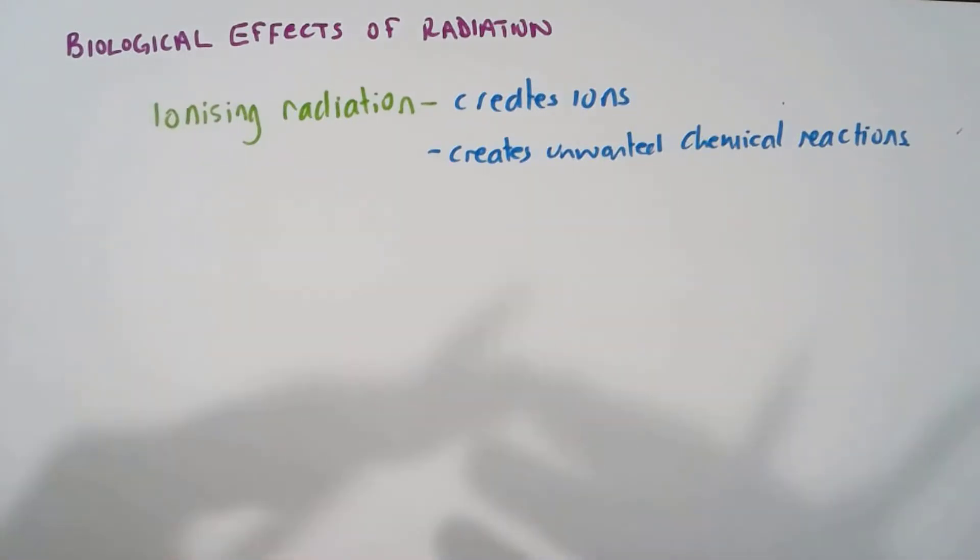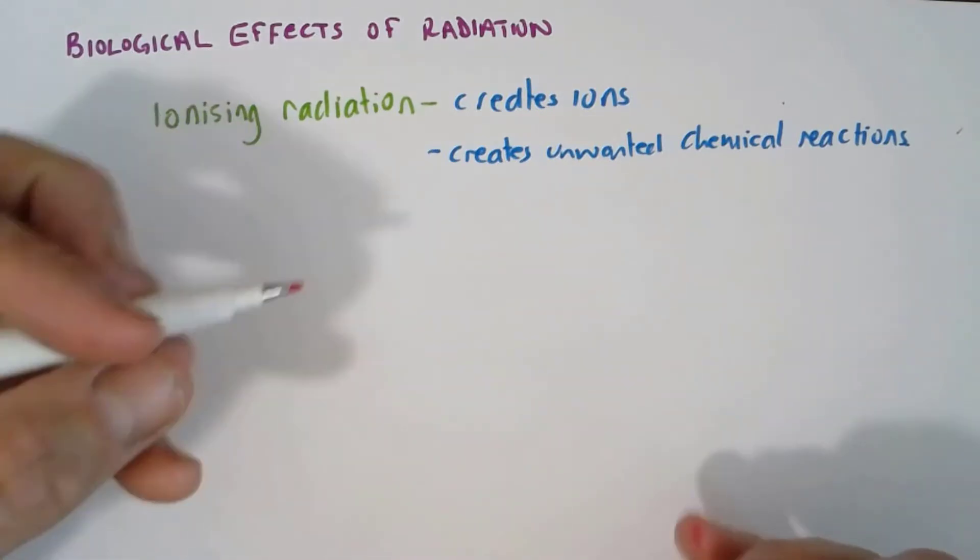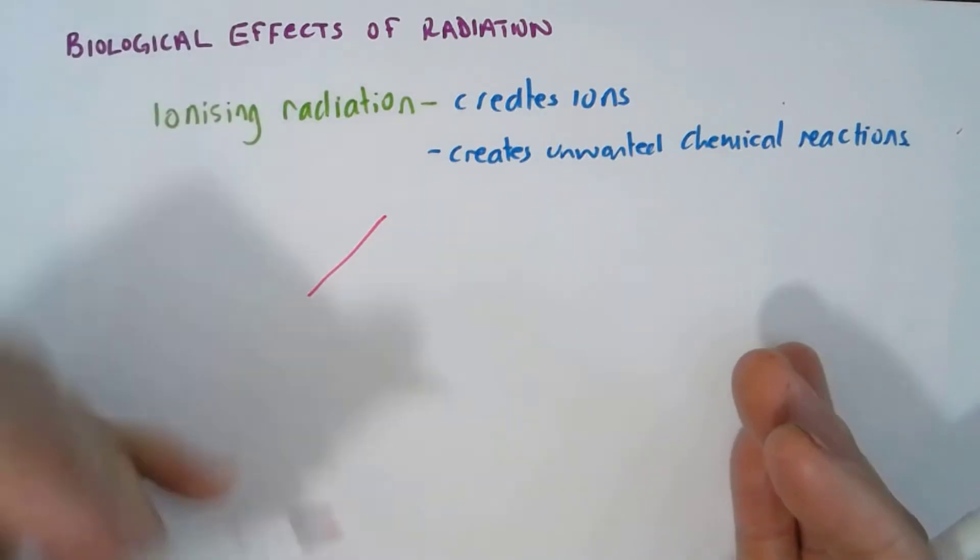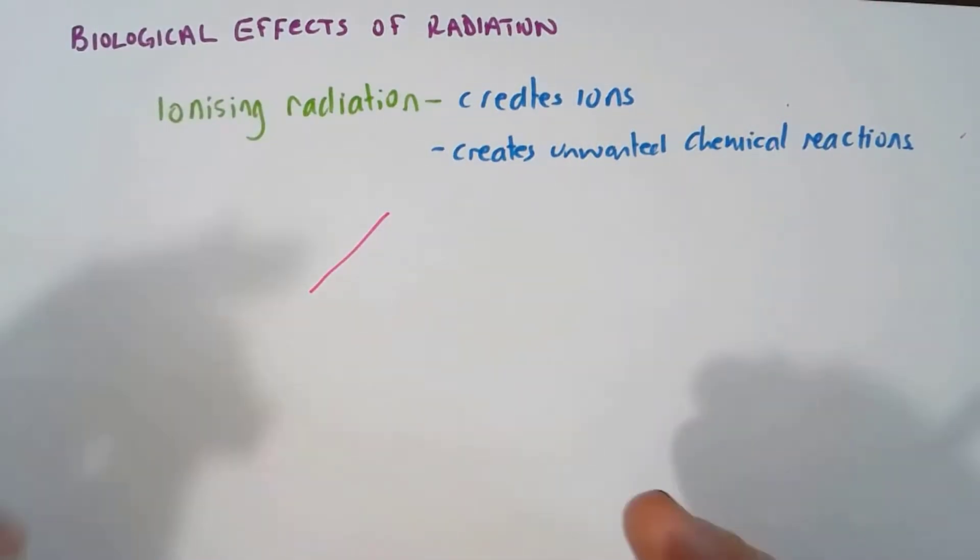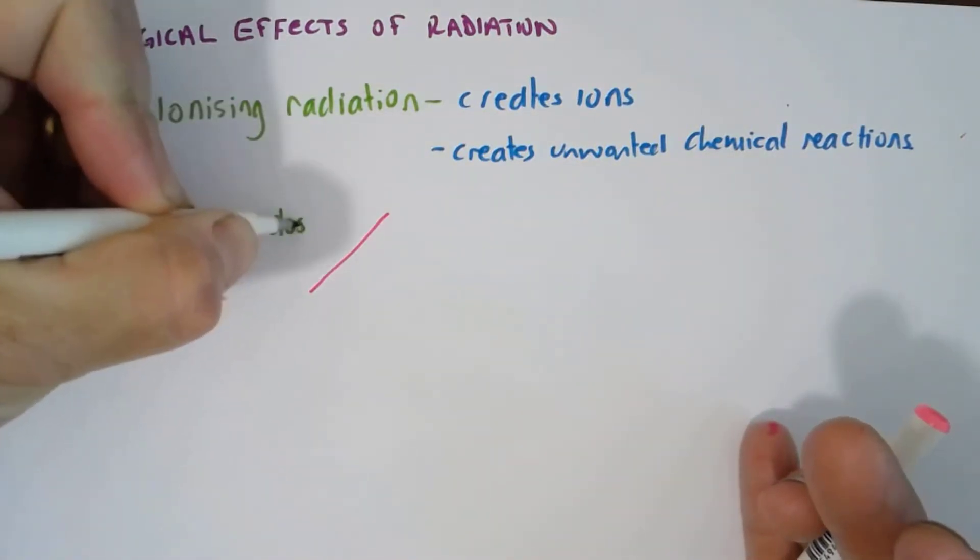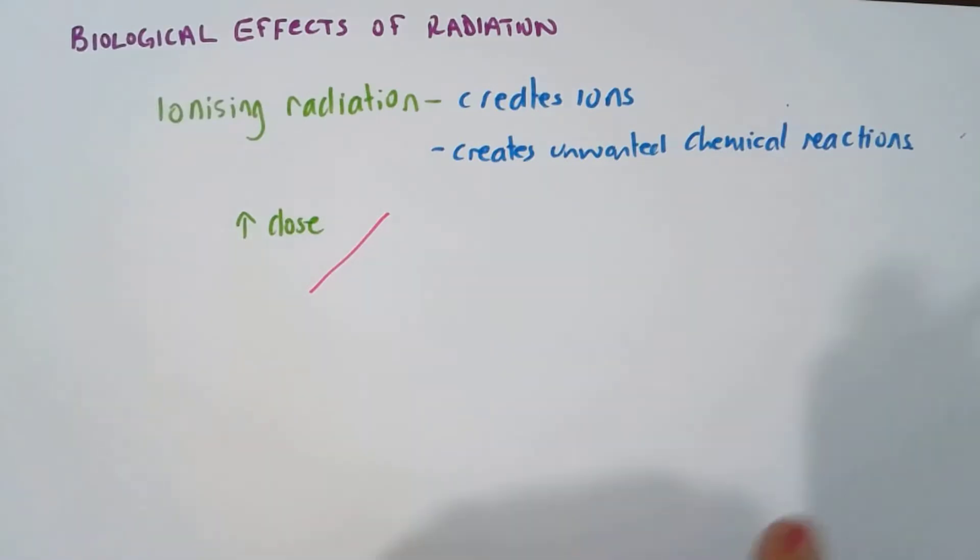There's short-term or acute effects and there's chronic or long-term effects. Firstly with high doses we have the short-term effects. So being exposed to a high dose of radiation can cause cell death.